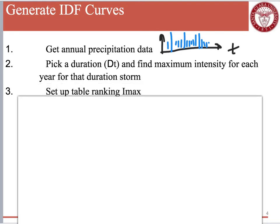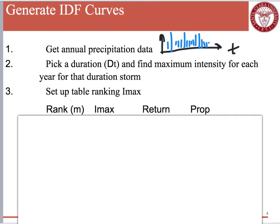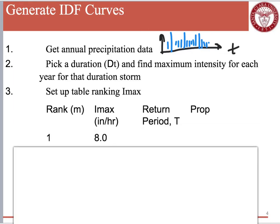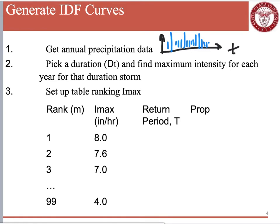The next step is to set up a table that ranks I-max. Across the top you'll have: rank M, I-max in inches per hour, the return period T — like the 10-year or 100-year — and then the probabilities. For example, let's say I was able to get 99 years of data. I'm going to rank them from 1 to 99, from the maximum intensity to the lowest. The highest I got for the particular duration I picked was 8 inches per hour.